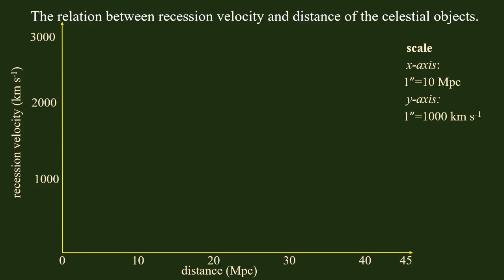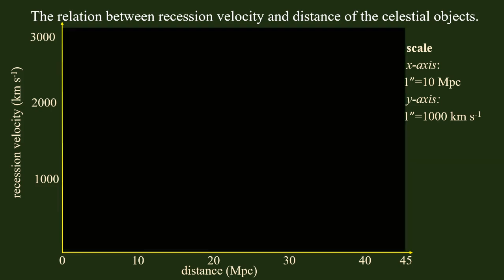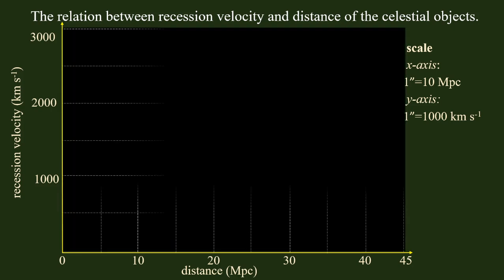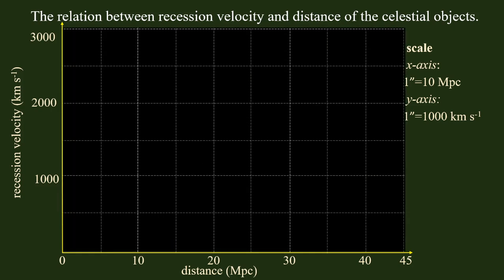The first data point has a recession velocity of about 30 kilometers per second at approximately 25 megaparsecs. We then plot subsequent data points from the given dataset to construct the graph.